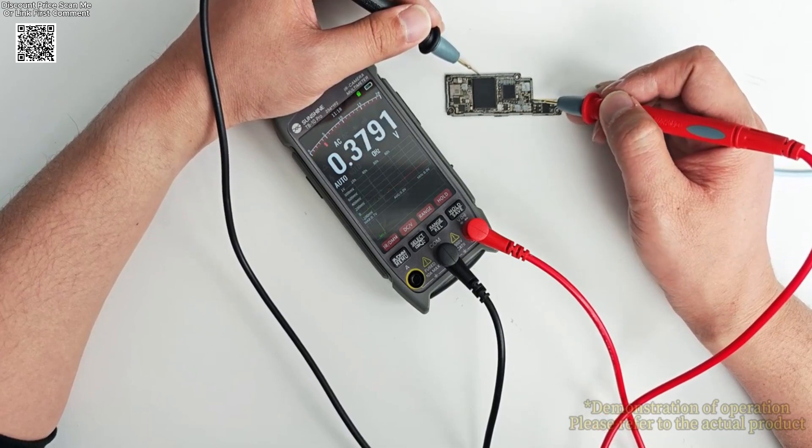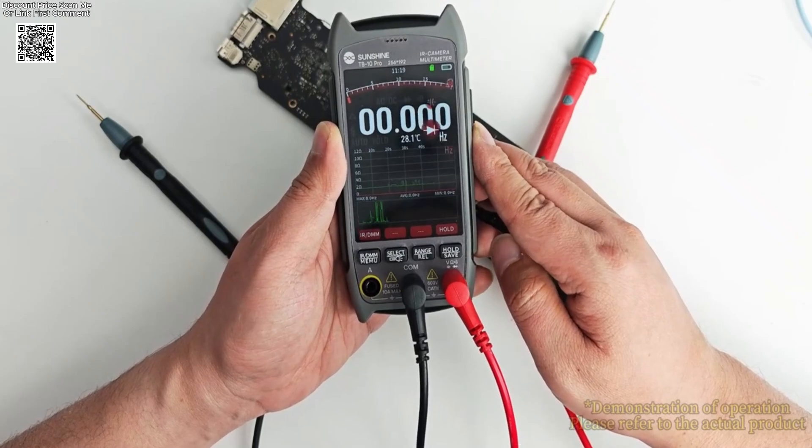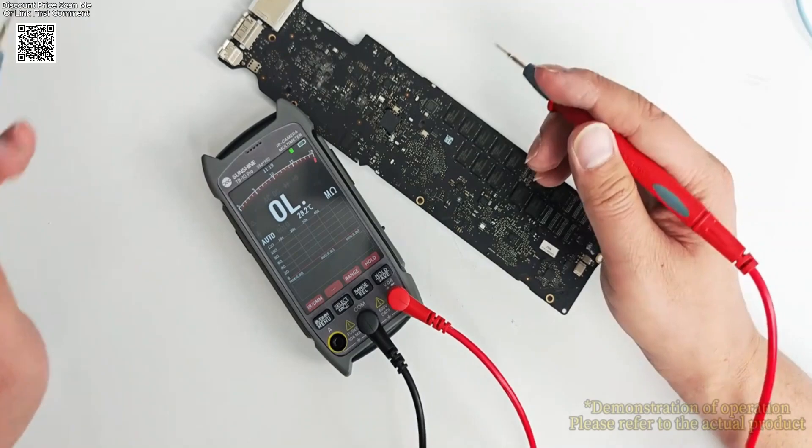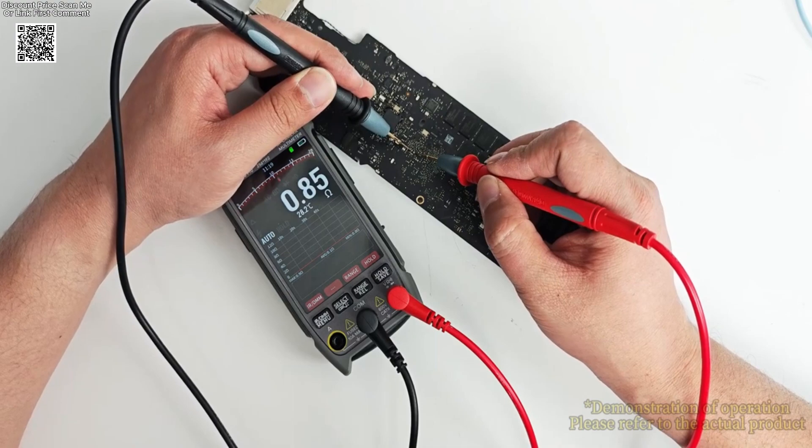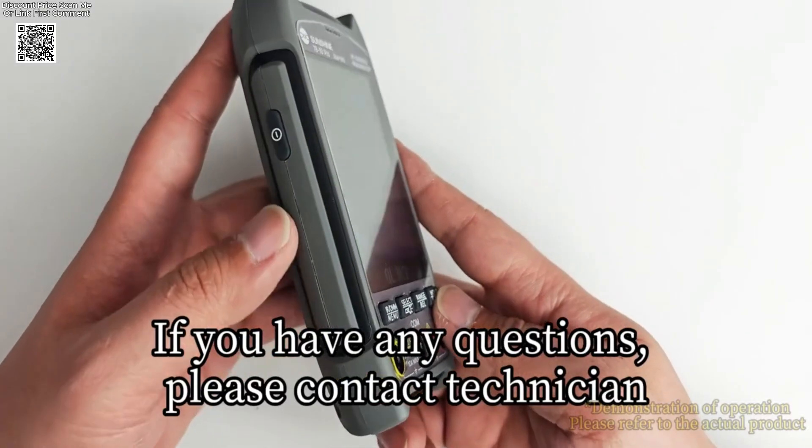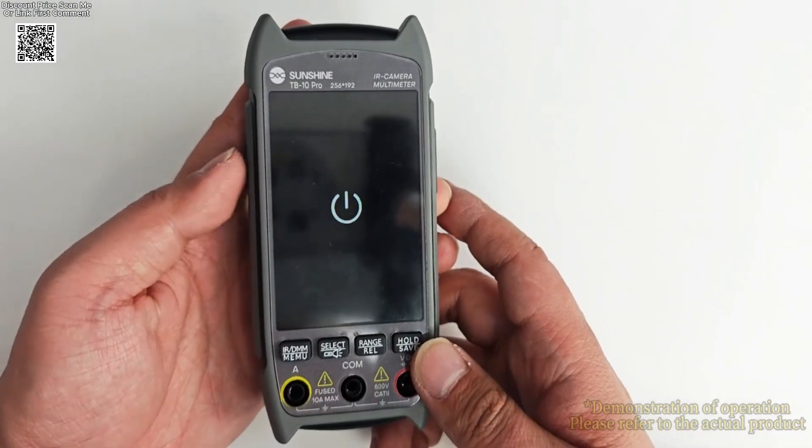Designed for durability, the TB10 Pro operates efficiently under a wide range of conditions, with a storage temperature of minus 20 degrees Celsius to 60 degrees Celsius and operating humidity below 85% RH. Its uncooled vanadium oxide VOX sensor captures images at a 25 Hz frequency, ensuring smooth and reliable imaging.